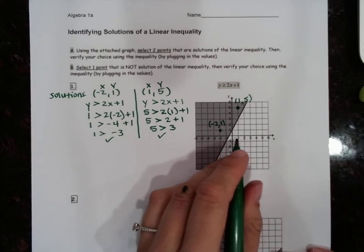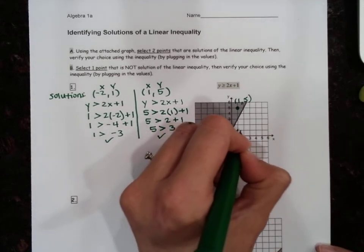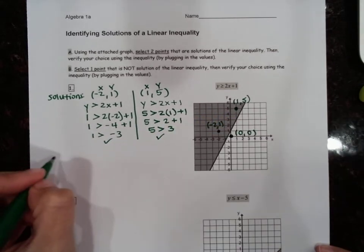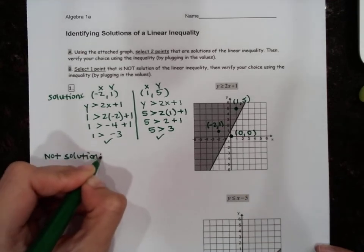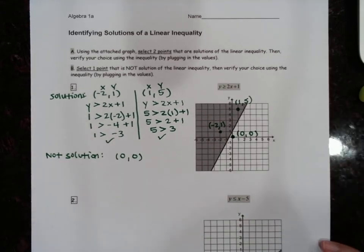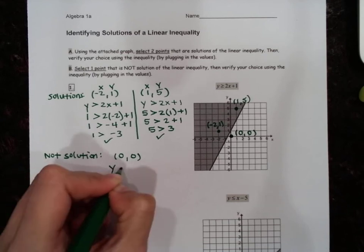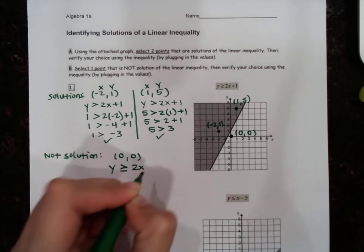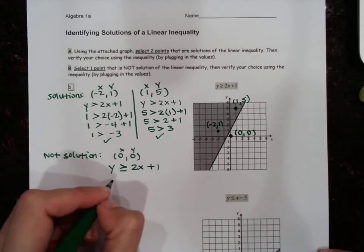Okay, and then let's prove why this region is not part of the solution. So the easiest point to always use is the point (0, 0). So not a solution: (0, 0). And we're going to show why (0, 0) is not a solution because y is greater than or equal to 2x plus 1 when x is zero and y is zero.